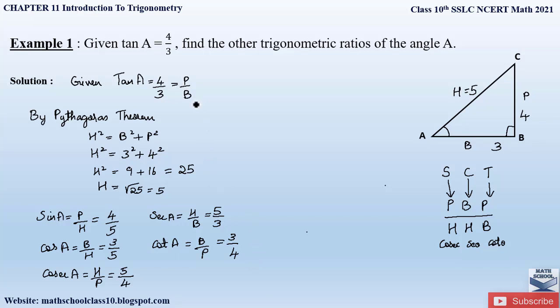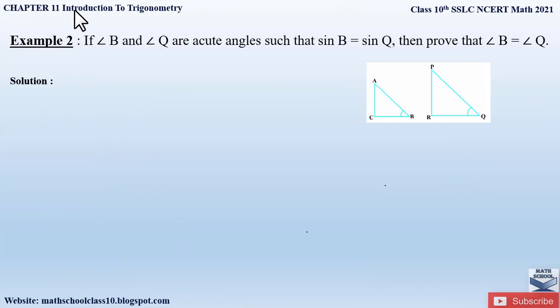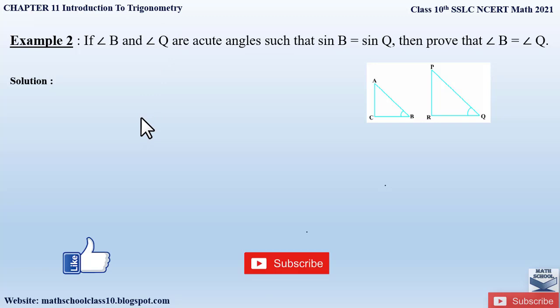So these are all the trigonometric ratios found given one trigonometric ratio. This is how we solve Example 1. If you have any doubts, comment below. In my next video, let us solve Example 2 from Chapter 11. Do like the video, subscribe to my channel, and hit the bell button for the latest updates as I complete the whole syllabus for Class 10. Also watch the related videos of Chapter 11 shown on screen. Thank you.